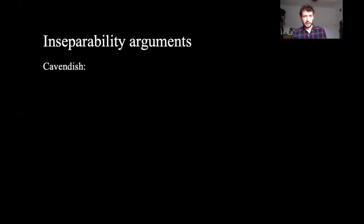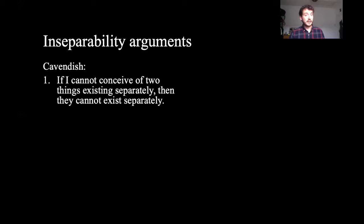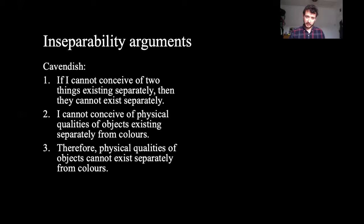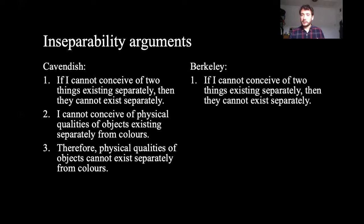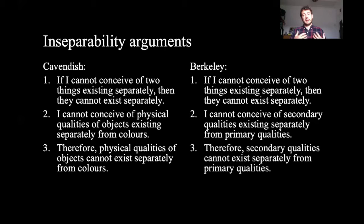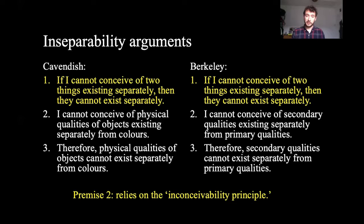Here are the two inseparability arguments. Cavendish argues: if I cannot conceive of two things existing separately, then they cannot exist separately; I cannot conceive of physical qualities of objects existing separately from colors; therefore physical qualities of objects cannot exist separately from colors. Berkeley's argument looks very similar: if I cannot conceive of two things existing separately, then they cannot exist separately; I cannot conceive of secondary qualities existing separately from primary qualities; therefore secondary qualities cannot exist separately from primary qualities. The key major premise in both cases relies on an implicit acceptance of the inconceivability principle.